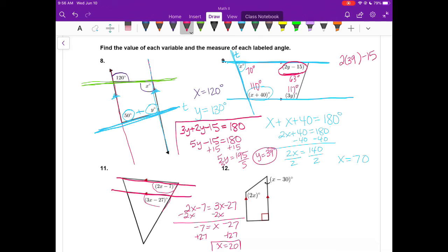So now that we know what X is, we need to find what our angles are. 2 times 20 is 40. 40 minus 7 is 33. Our top angle would be 33 degrees. Our bottom, we're going to take 3 times 20 is 60. 60 minus 27 gives us 33. And those two angles would be equal.